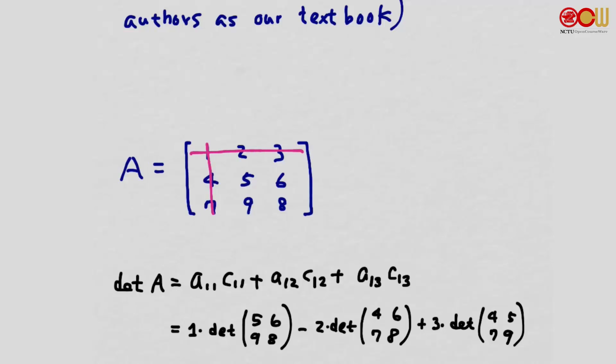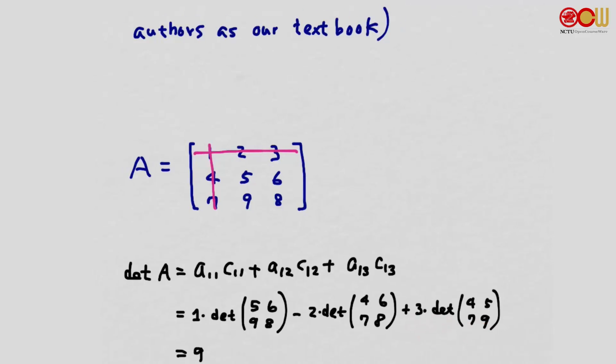C11 would be the determinant obtained by erasing the first row and first column, so we have the submatrix 5, 6, 9, 8. The determinant of 5, 6, 9, 8. Similarly, we have A12 which is 2, and we can compute C12. C12 would be minus the determinant of 4, 6, 7, 8. Similarly, we compute A13 and C13. We can verify that the result equals 9.